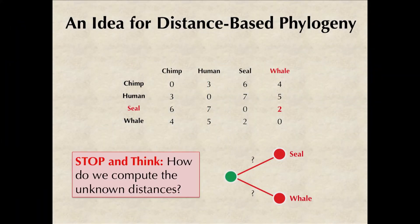The first question that we have is how to compute the distances that are represented by the question marks. Because the distance between seal and whale is two, of course we know that the sum of the question marks is equal to two, but that's all we know right now without using more information from the distance matrix.